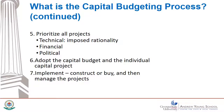Sixth, the governing or executive authority has to approve the purchase of items in the capital budget. Implementation, the seventh step, entails the purchase or construction of each capital project. Once it's obtained or built, you have to operate and maintain it, which is a burden that will fall on future annual operating budgets.